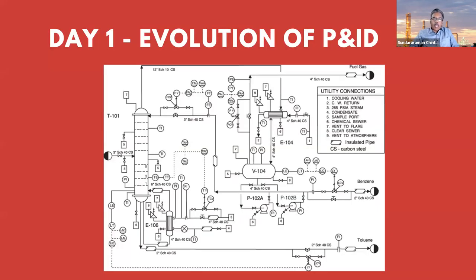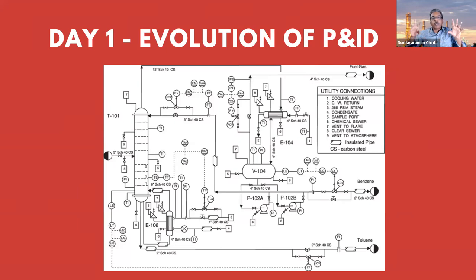On day one, we are going to talk about a very important document known as the P&I diagram — in short, P&ID. The P&ID has evolved from the process flow diagram, known as PFD. For all this to happen, there should be a starting point — either an existing refinery that wants to construct a new plant or increase capacity, or an organization that wants to start a new greenfield process plant.